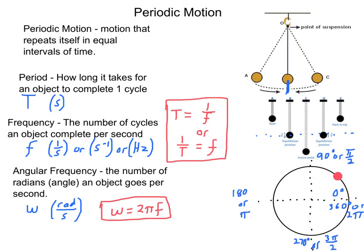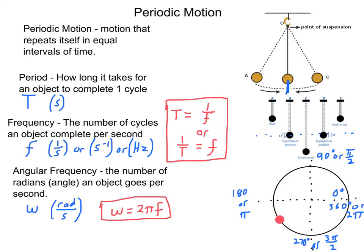Now to talk about angular frequency — I purposefully drew an xy-axis on this circle and changed the object's rotation to counterclockwise, because that's the direction our angles traditionally go around a circle. Angular frequency is the number of radians per second. A radian is a different way of measuring angles. If you're in ninth grade, you're used to only hearing about degrees: 0 degrees, 90 degrees, 180 degrees, 270 degrees.